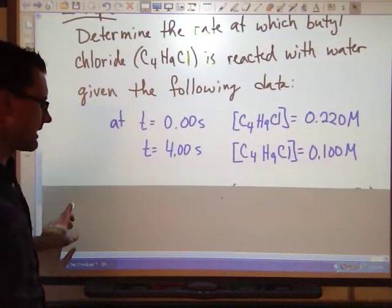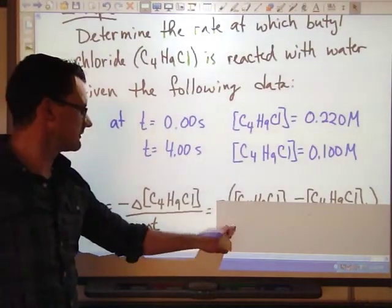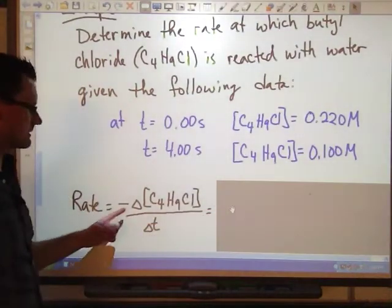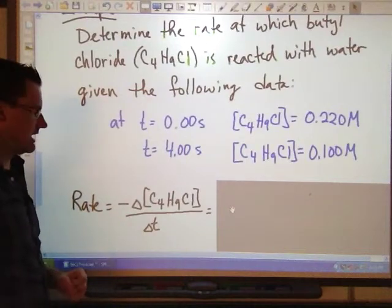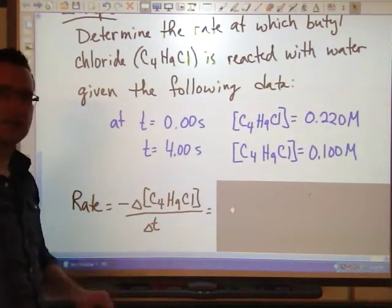Now that I know that, I know the appropriate way to express the rate. Rate is equal to the negative change in concentration of C4H9Cl over delta T.